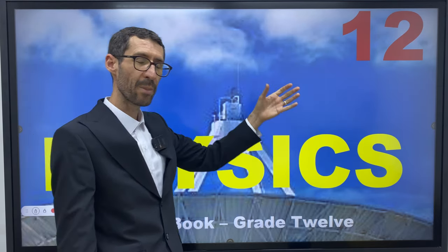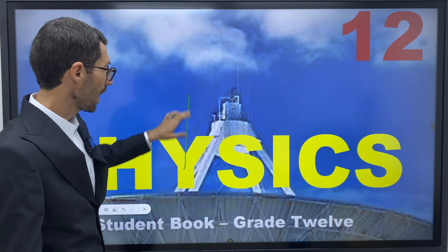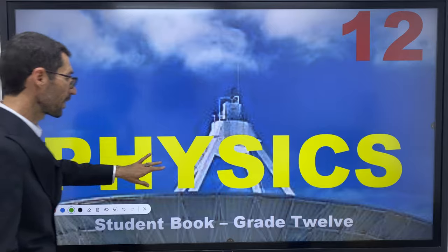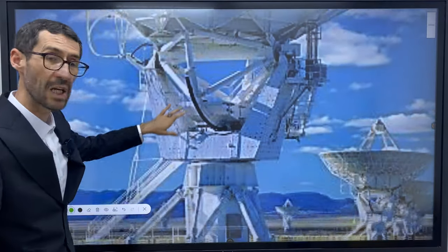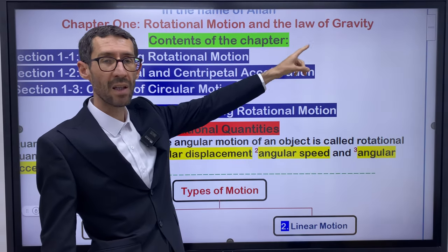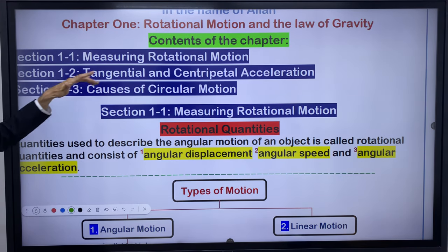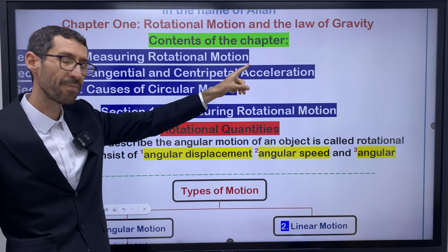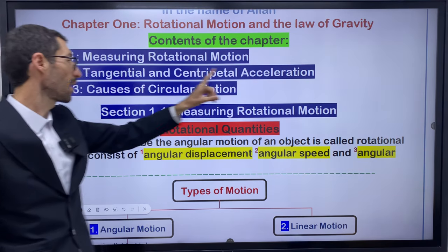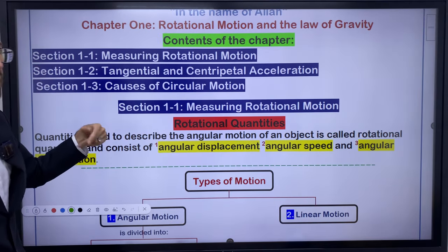Especially chapter 1. Chapter 1 talks about rotational motion and the law of gravity — that's the title of chapter 1. This chapter consists of three sections: section 1.1, measuring rotational motion; section 1.2, tangential and centripetal acceleration; and section 1.3, causes of circular motion.